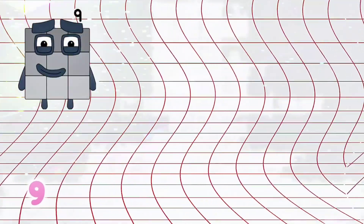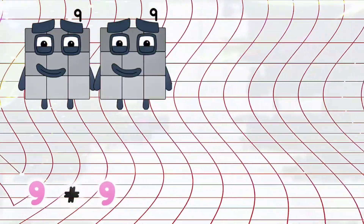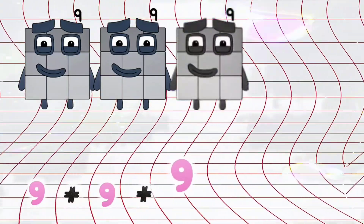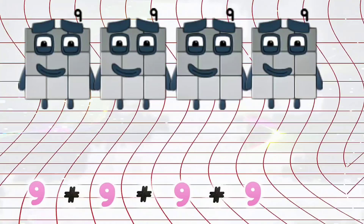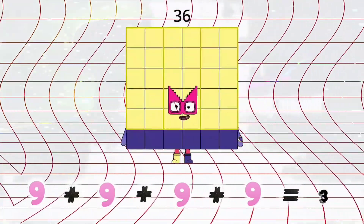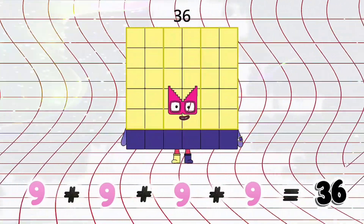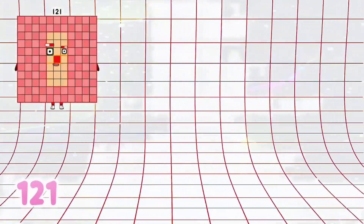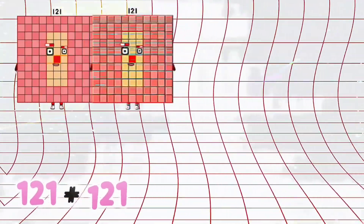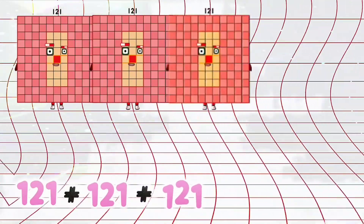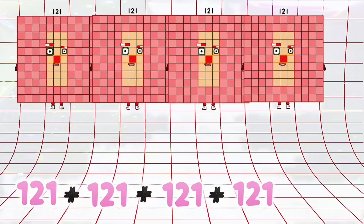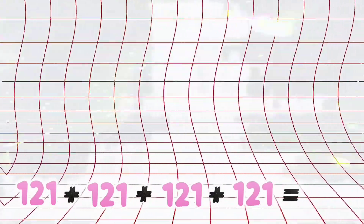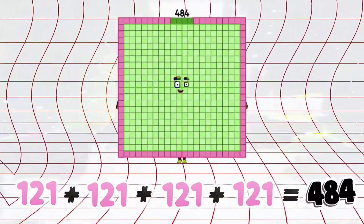9 plus 9 plus 9 plus 9 is equals to 36. 121 plus 121 plus 121 plus 121 is equals to 484.